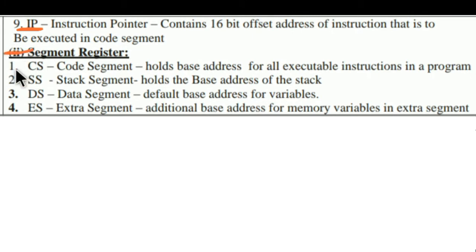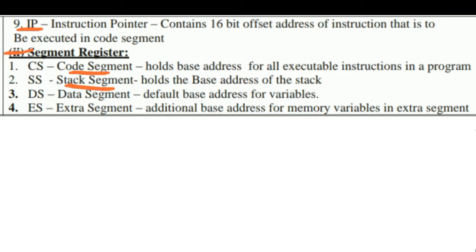The second category is segment registers, which has CS, SS, DS, and ES. CS stands for code segment and holds the base address for all executable instructions in a program. SS stands for stack segment and holds the base address of the stack. DS stands for data segment and provides the default base address for variables. ES stands for extra segment and provides an additional base address for memory variables in the extra segment.